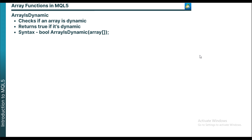The next function is ArrayIsDynamic. What this function does is that it checks if an array is dynamic or static. The return value is always a bool. The only parameter is just the name of the array. If it returns true, it means the array is dynamic. If it returns false, it means the array is a static array.